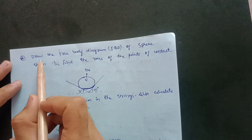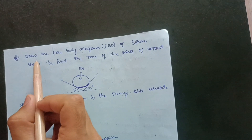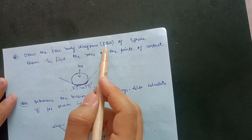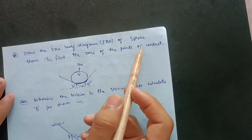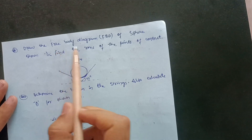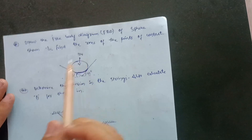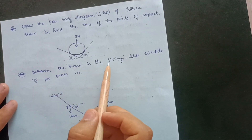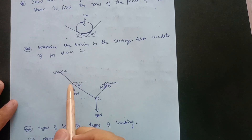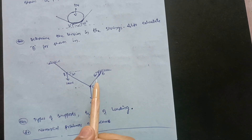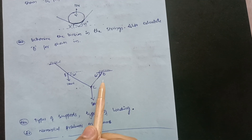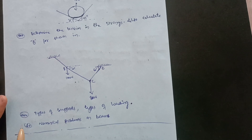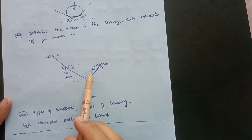You also have to focus on the free body diagram — it is a simpler topic. A most frequently asked question is: draw the free body diagram (FBD) of a sphere shown and find the reactions at the points of contact. You have to draw the FBD and find reactions at the two contact points. Also important: determine the tension in the strings and calculate theta. Try two to three problems on this string/sphere concept.